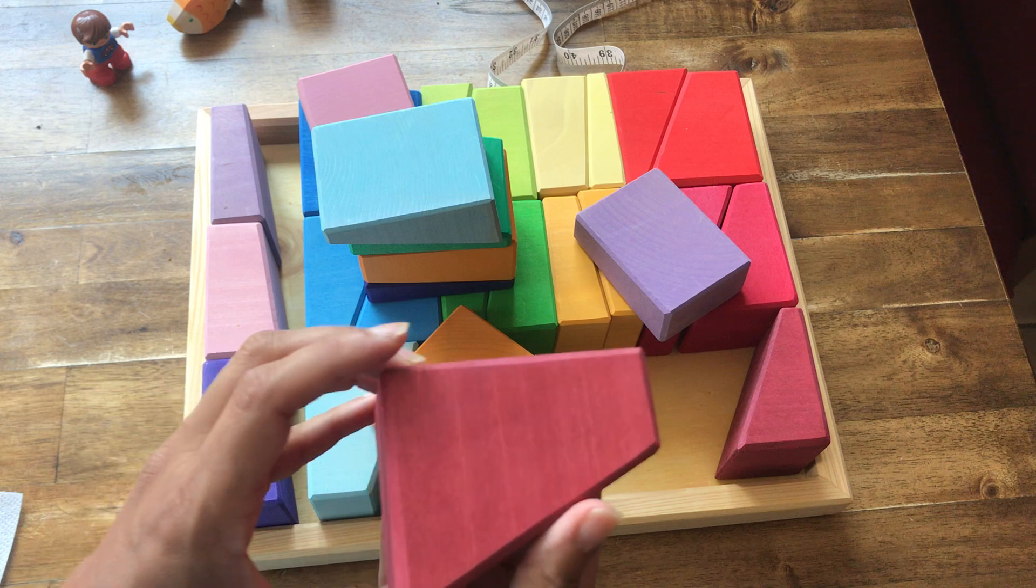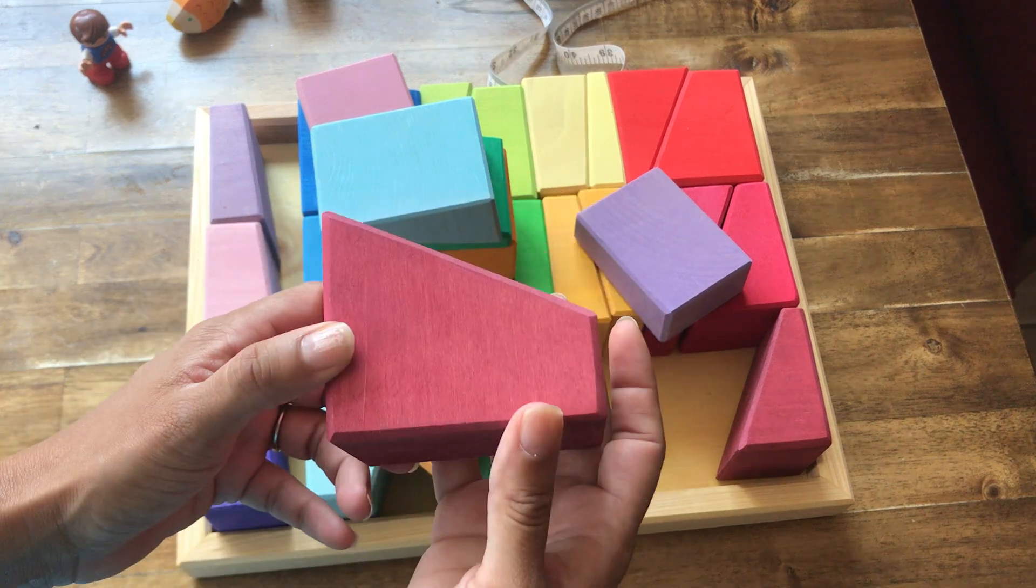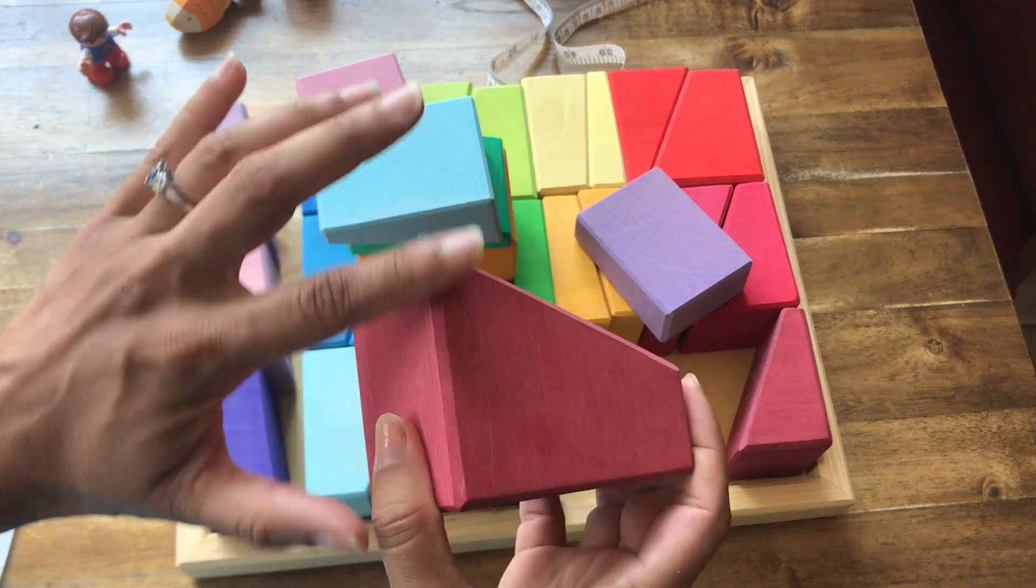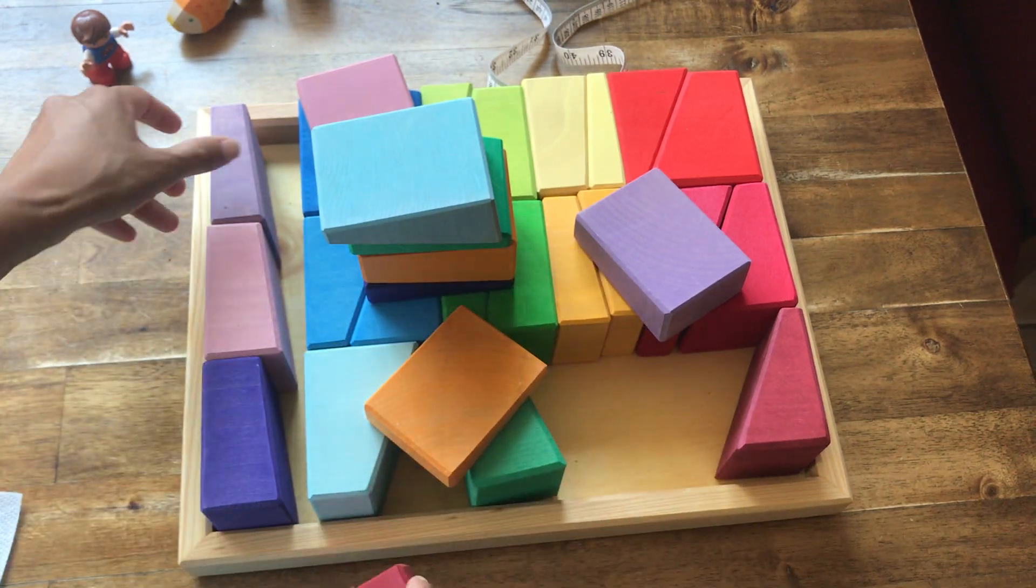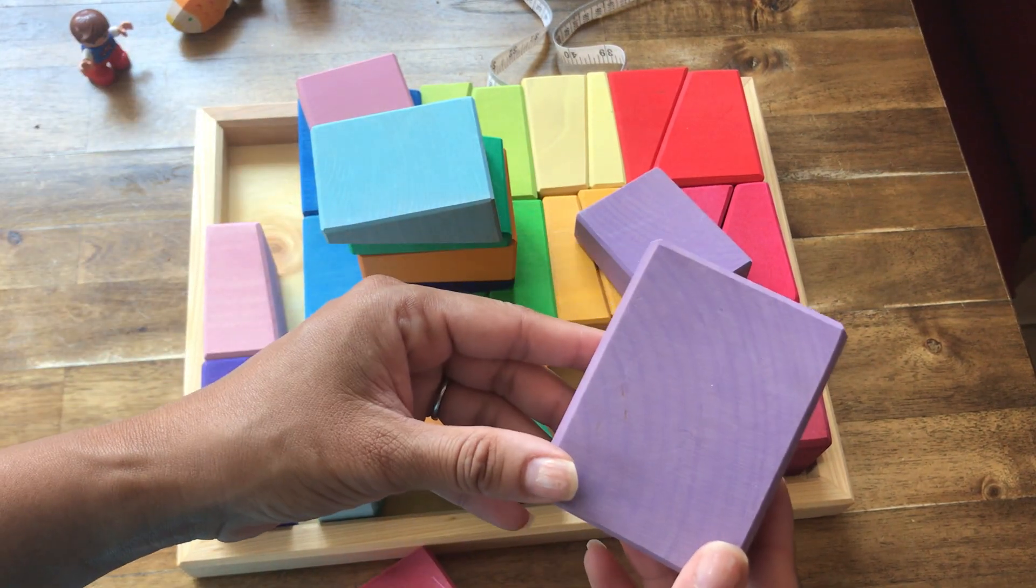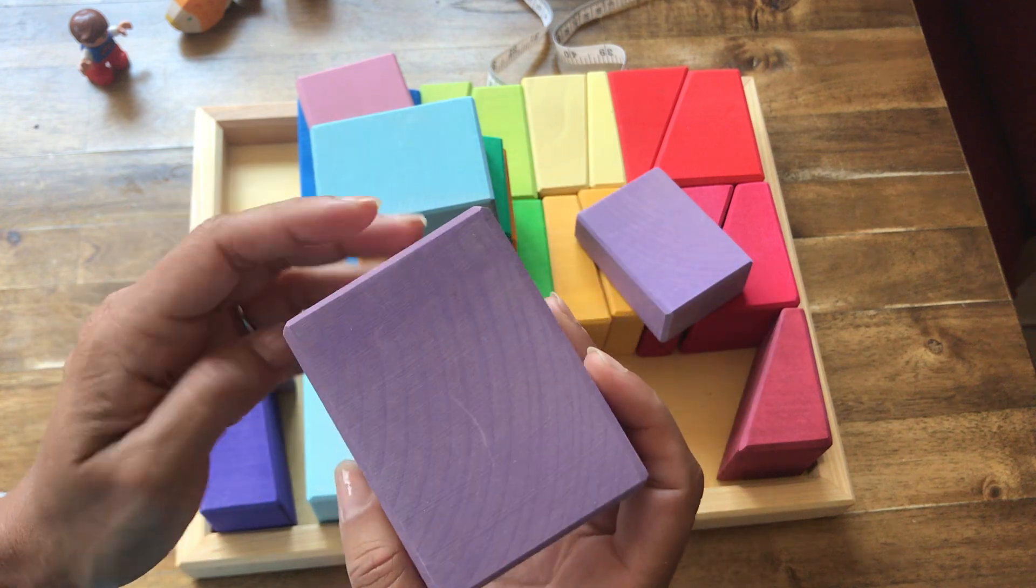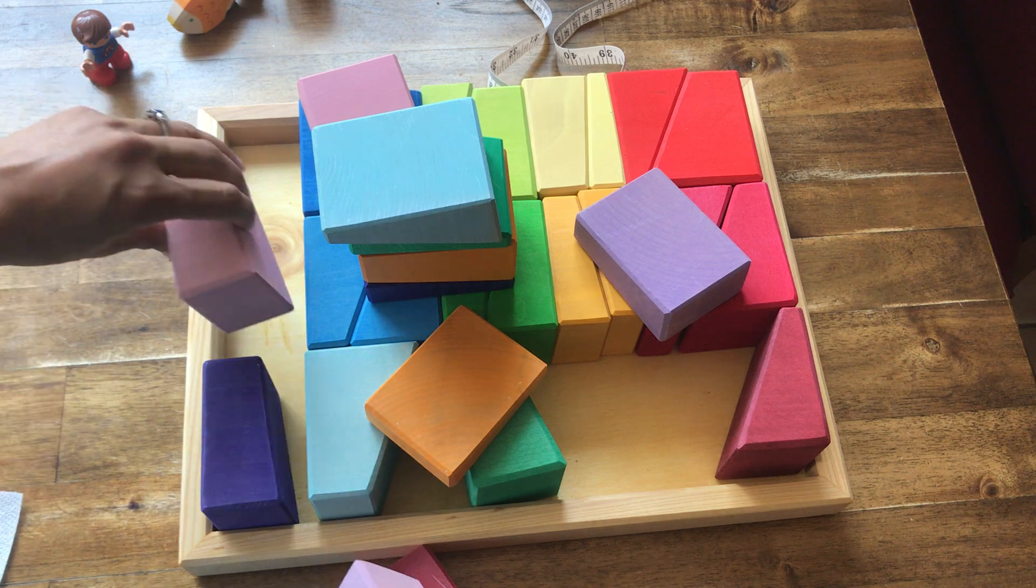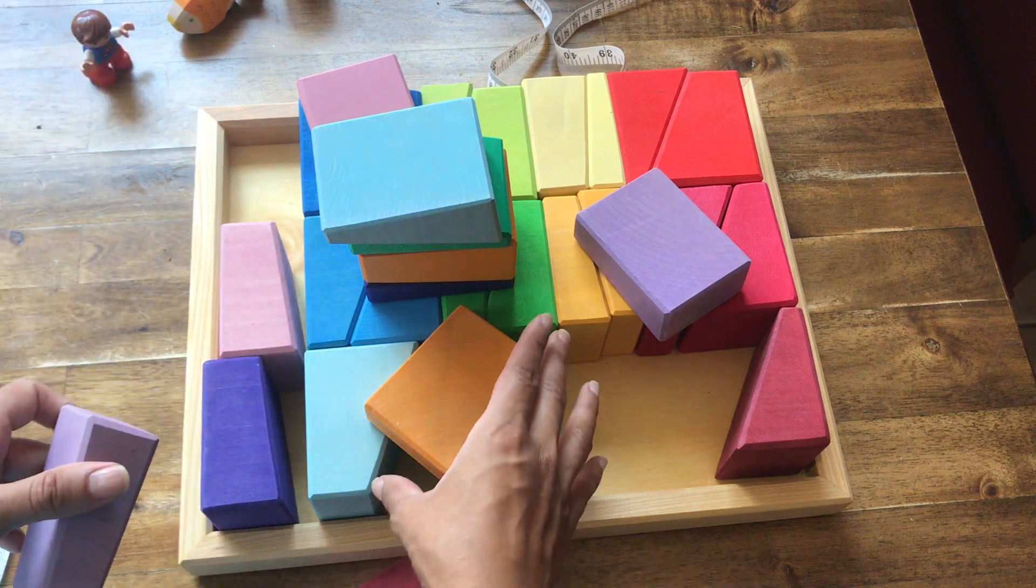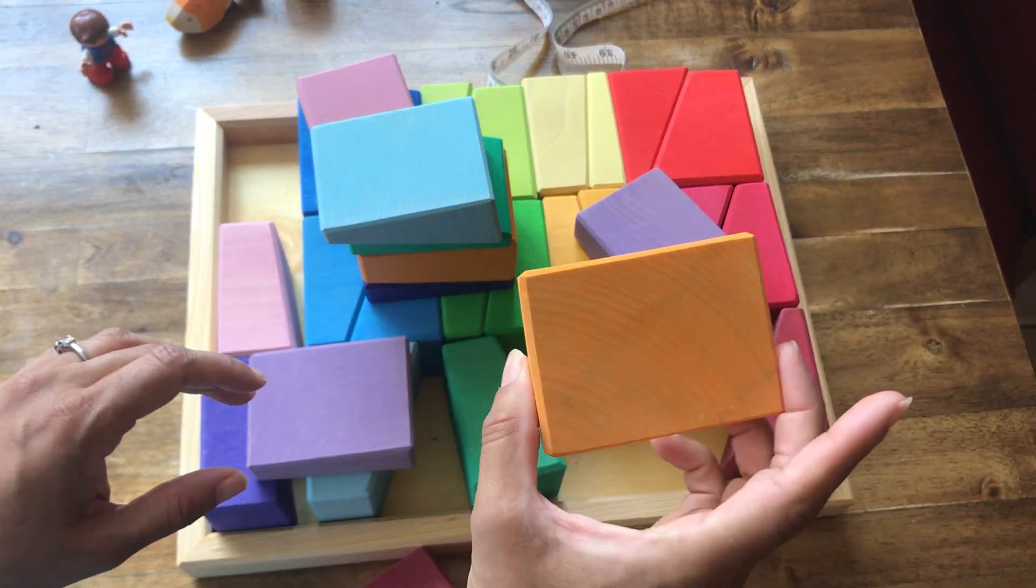Again, as usual, they have the Grimms' beautiful chamfering edging on all of the edges and really cool grain. Some of the grains you can see on the light colors really well. I had one that's a little spotting. And as usual, you should expect some color transfer on them.